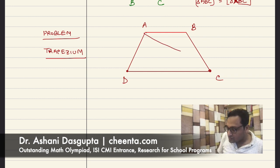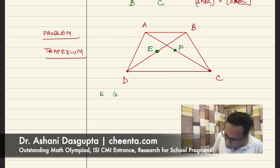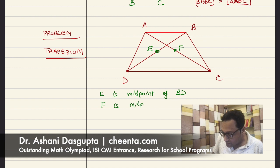And let's join the diagonals of the trapezium AC and BD. Let's mark the midpoints of the diagonals, like E and F. So, E is midpoint of BD and F is midpoint of AC.